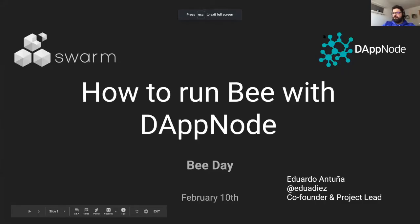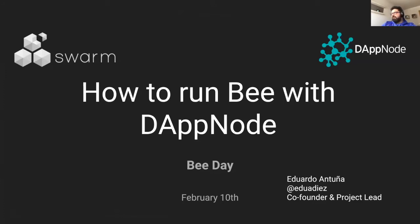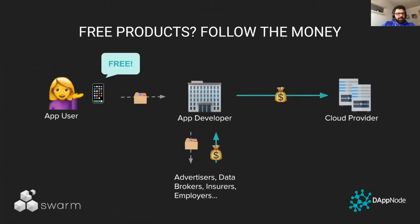I'm very happy to be here today. It's amazing what is happening around Swarm — I'm so proud to see this project grow. Today I want to talk about how to run a Bee node with DAppNode and why that matters. I tried to switch my message but discovered we are in the same situation and need to find ways to change the current economic model, which is the purpose of Swarm and DAppNode.